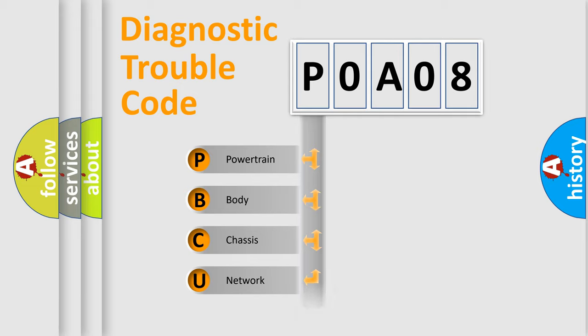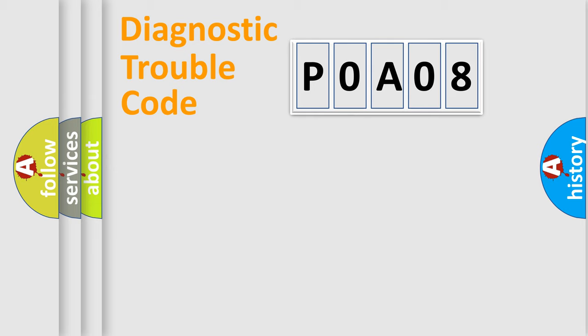Powertrain, Body, Chassis, Network. This distribution is defined in the first character code.